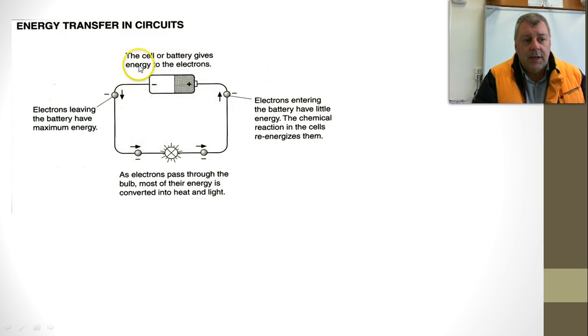Now the battery gives energy to the electrons. That makes sense because if you have a fully charged battery things work really well, and as the battery gets used things start to move slowly. The electrons leave the battery and the battery is effectively a chemical process.